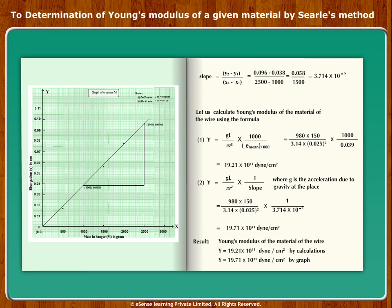Result: Young's Modulus of the material of the wire Y is equal to 19.21 into 10 raised to 11 dyne per centimeter square by calculations, and Y is equal to 19.71 into 10 to the power 11 dyne per centimeter square by graph.